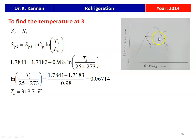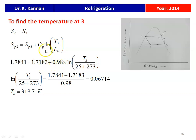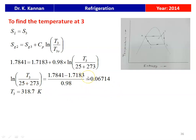We write: Sg2 equal to Sg3 plus Cp multiplied by the logarithm of T3 divided by T3s. For the given evaporator temperature, Sg2 equals 1.7841. For the given condenser temperature, Sg3 equals 1.7183, and Cp is 0.98. Rearranging, the logarithm of T3 divided by (25 + 273) equals (1.7841 minus 1.7183) divided by 0.98, which gives 0.067414.